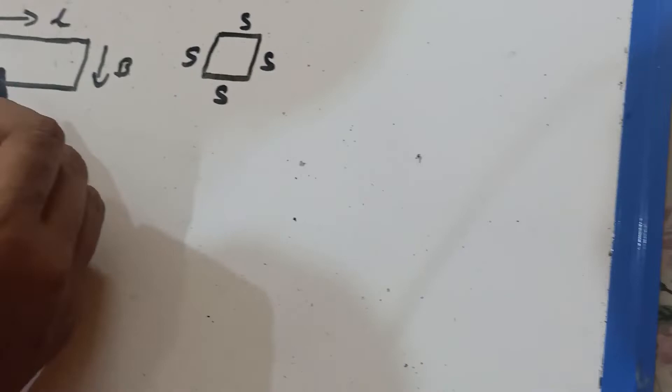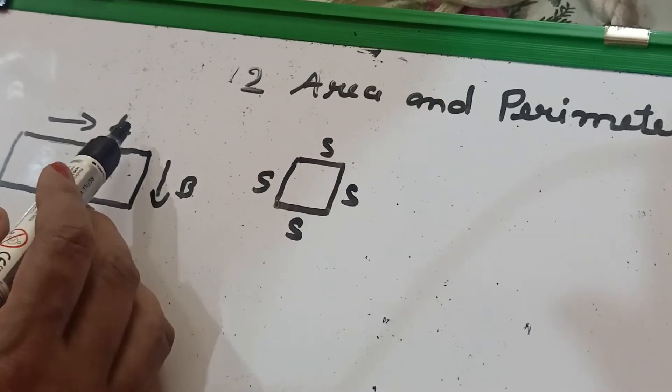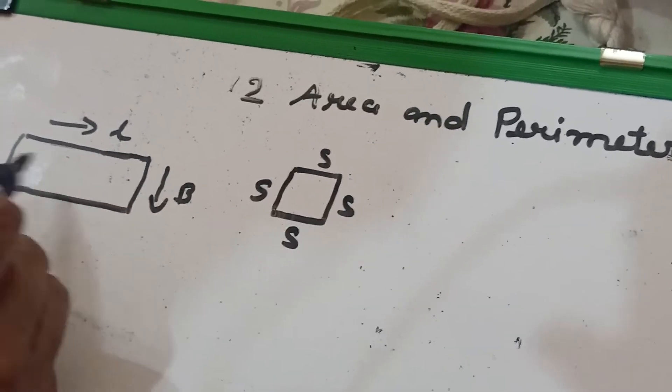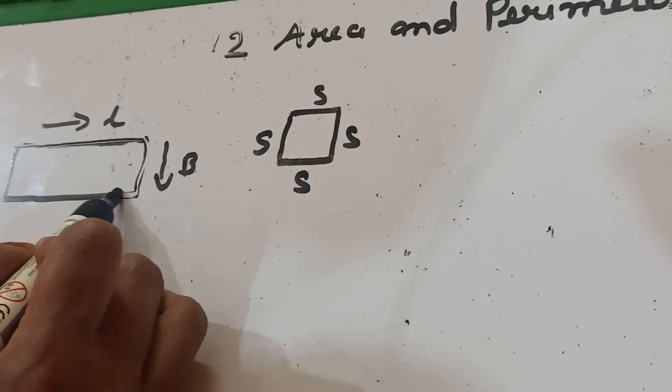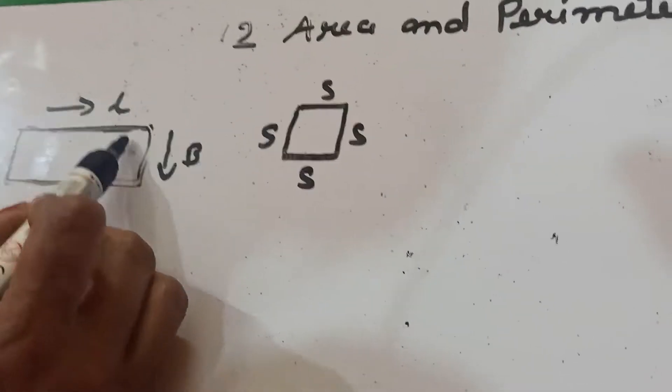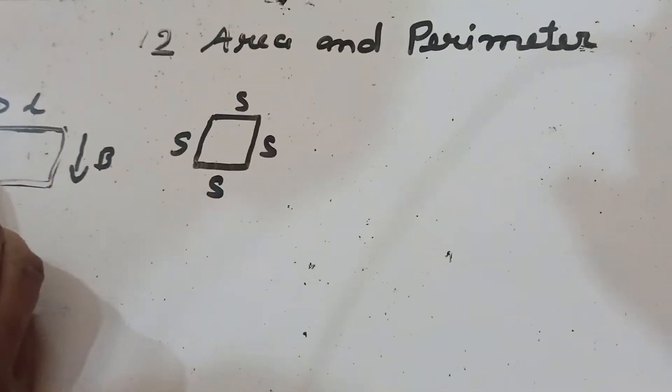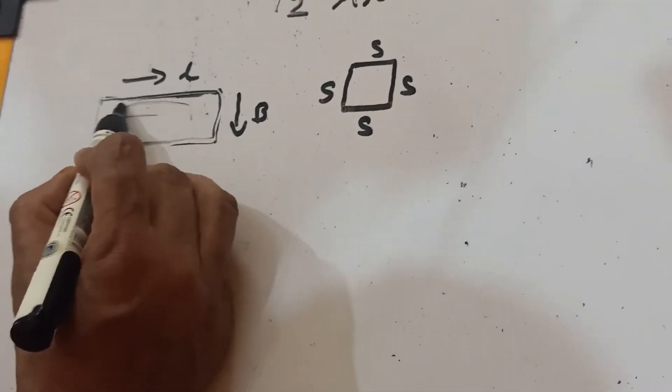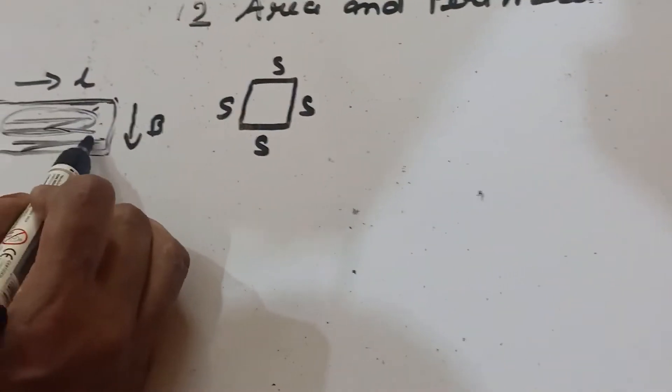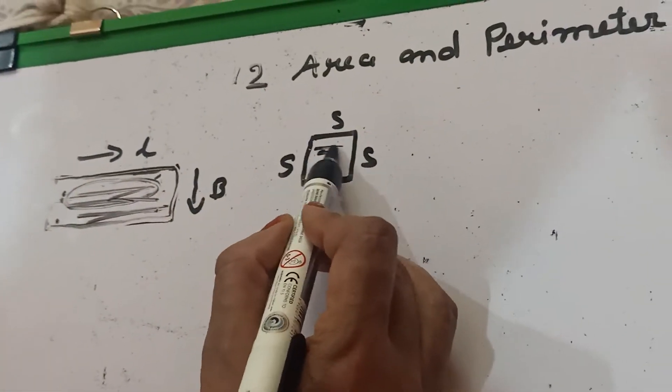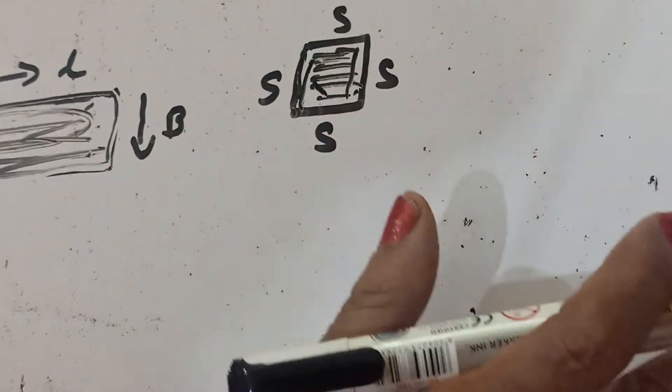What is area? The measure of the surface enclosed by the plane figure is called area. That means the measurement of the area enclosed by the length and breadth is called area. This portion is called the area of rectangle or this is the area of square.